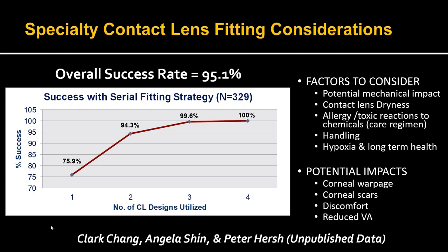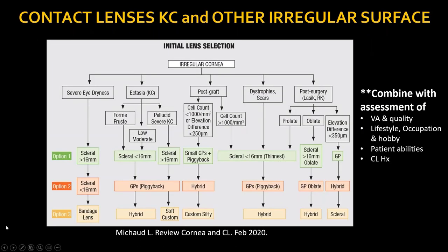Diversity of lens options is critical. A helpful decision flowchart from Dr. Langis Michaud covers specialty lens selection for keratoconus and other pathologies — a useful reference. For clinicians who want scan-based fitting support, the Pentacam's CSP module captures corneal and scleral profile data that can be exported to create different scleral lens designs. My resident just yesterday dispenses his first scleral lens designed using CSP — an example of how technology improves patient outcomes.